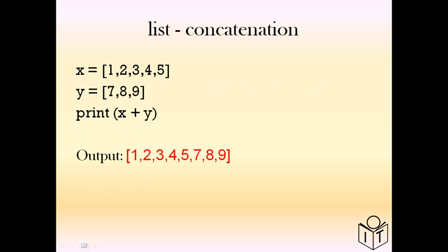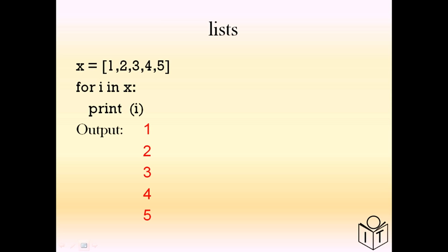We can add lists together — this is called concatenation. If we want to print a list we normally print it item by item, so we can use a for loop. For example, we iterate with i: 'for i in x' and then 'print i', which will print each member of the list x.